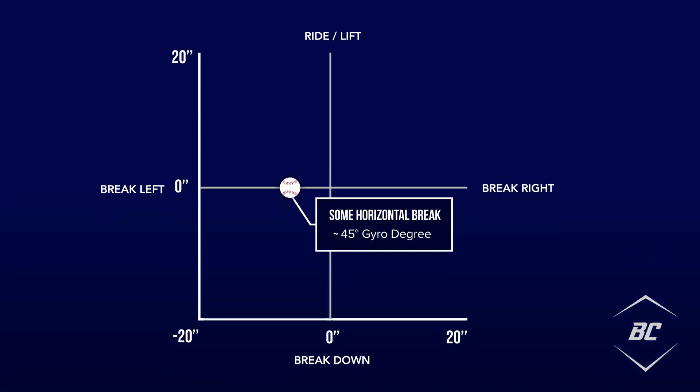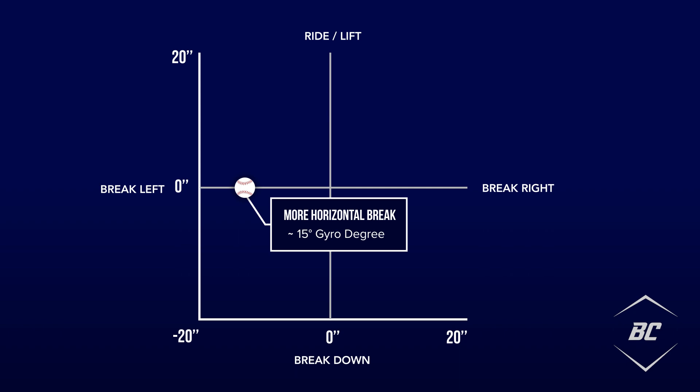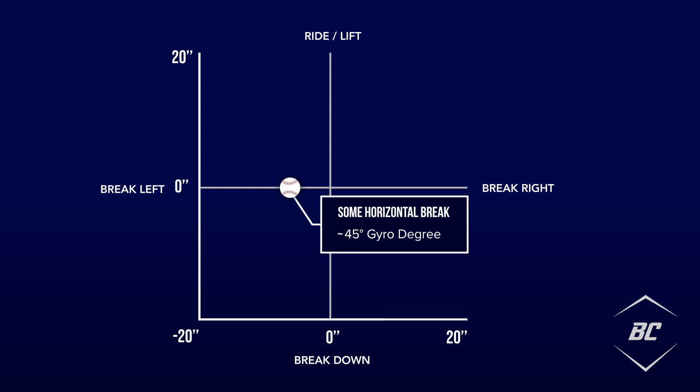Every pitch will have a gyro degree value that helps you measure how much of each type of spin is present. This data can be used when analyzing your pitches to work towards your preferred movement profile. For example, if you'd like to develop a sweeping slider, your goal might be to maximize horizontal movement — in this case, you'll want more transverse spin, which means a lower gyro degree value. You can use gyro degree as a guide to track your progress and evaluate how you succeed at implementing transverse spin.